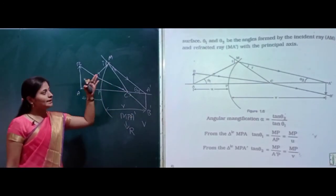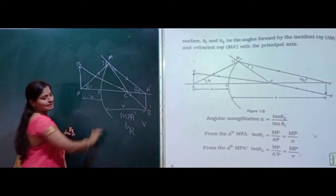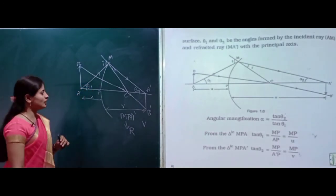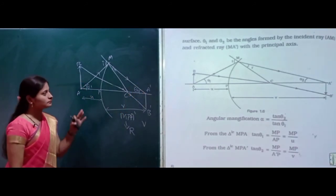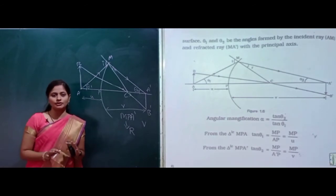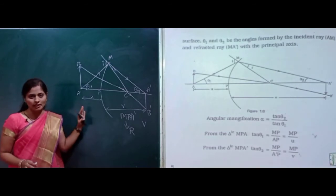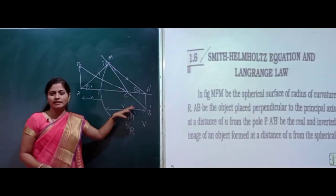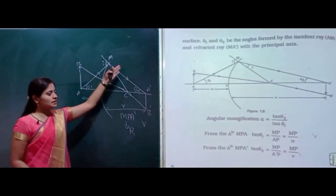Theta 1 and theta 2 are the angles formed by the incident ray AM and the refracted ray MA dash with the principal axis respectively. So theta 1 is formed by the incident ray and theta 2 is formed by the refracted ray MA dash. I and R denote the incident ray and the refracted ray. Theta 1 and theta 2 are the angle of incidence and angle of refraction.